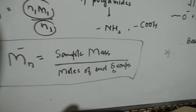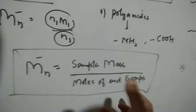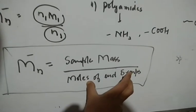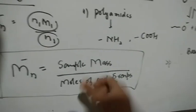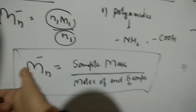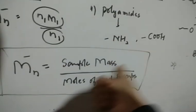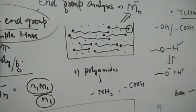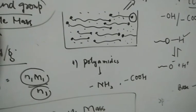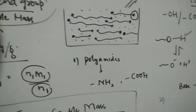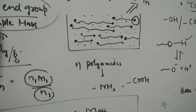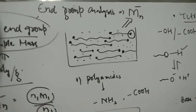These are the basic concepts involved in end group analysis. We calculate the moles of end groups with the help of a titration experiment, pH metric, or spectroscopic method, and then calculate the number average molecular mass as total sample mass divided by the moles of end groups. The next important method is viscosity, which will be covered in the next class.